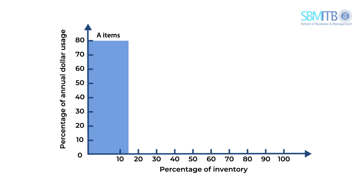Products classified in class B are products that have a medium annual dollar volume. Those products represent around 15% to 25% of the total dollar usage, but represent 30% of the total inventory items.